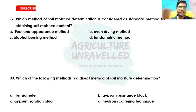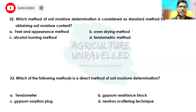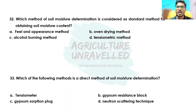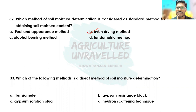I hope that is clear. Coming to the next question: which method of soil moisture determination is considered the standard method for obtaining soil moisture content? The options are feel and appearance method, oven drying method, alcohol burning method, or tensiometric method. The correct answer is the oven drying method. Oven drying method is considered the standard method because many direct methods are based on it.